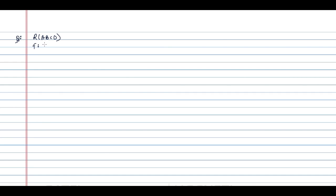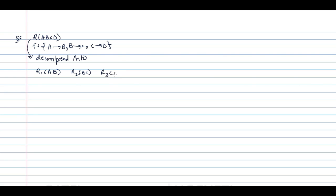Let us see the first question. They are giving the relation R(A, B, C, D) and the functional dependencies are: A determines B, B determines C, and C determines D. This table is decomposed into three relations: R1(A, B), R2(B, C), and R3(C, D).